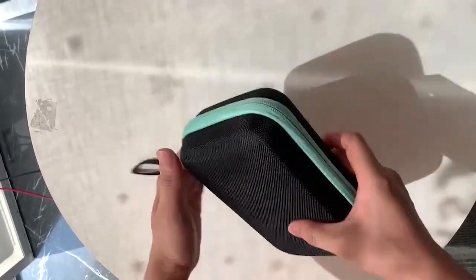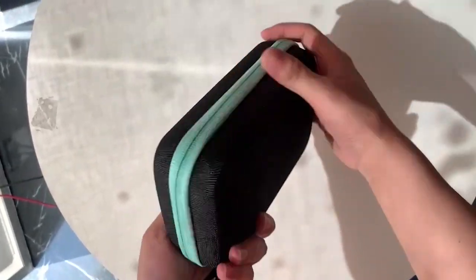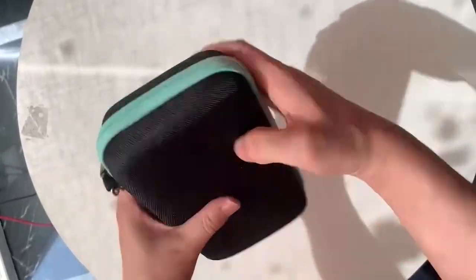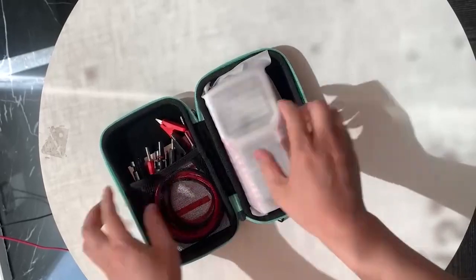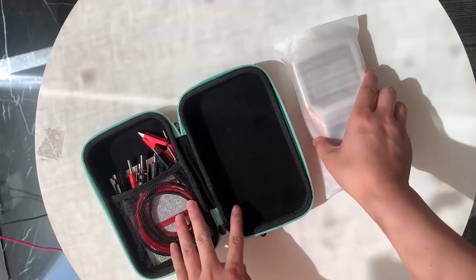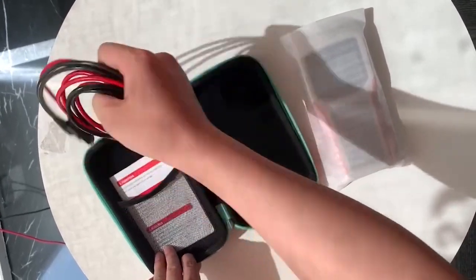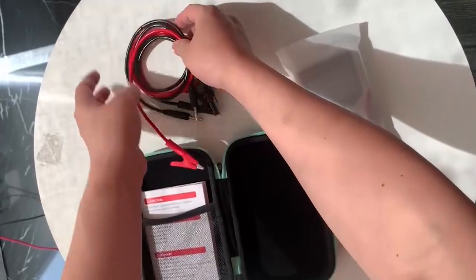Okay guys, this is our solar panel tester. The package is an EVA bag. Now let's open it. Inside we have the tester right here and two kinds of cables.